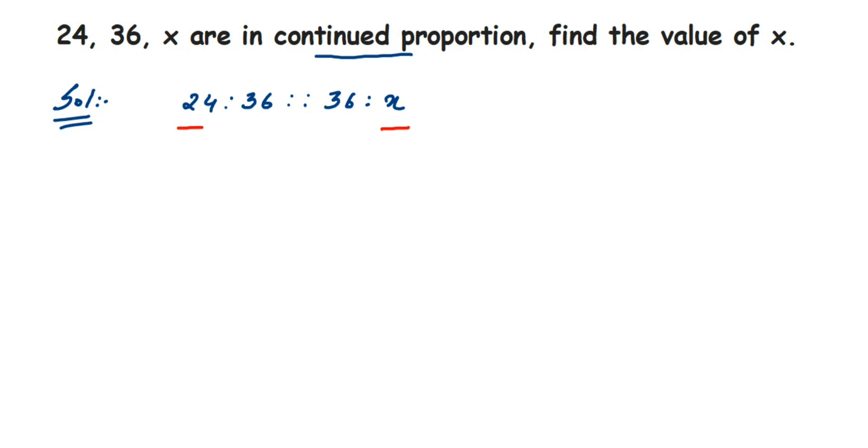So product of these two numbers, that is product of extremes, will be the same as or will be equal to product of the means. The numbers which are inside, that is 36 and 36, the product of these means will be equal. This is what the proportion means. Let us solve this one now.